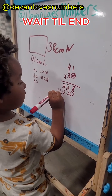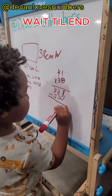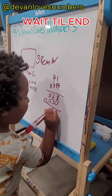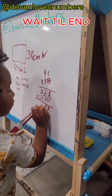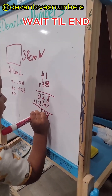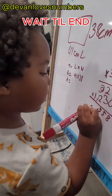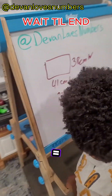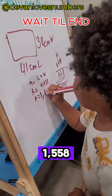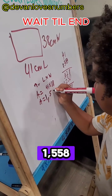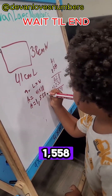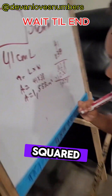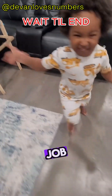Now you add it. 8 plus 0, 8. 2 plus 3, 5. 3 plus 2, 5. 0 plus 1, 1. And yet equals 1,558 sesame seeds. Good job!